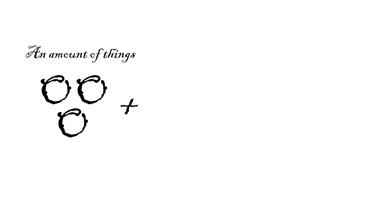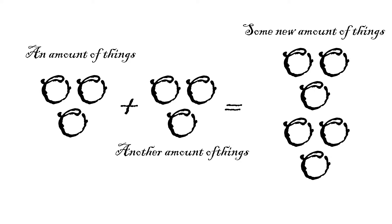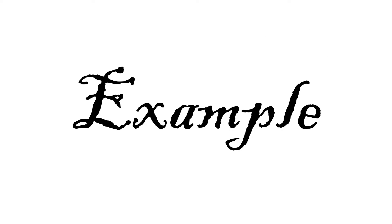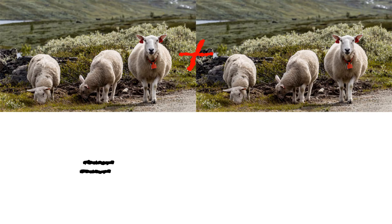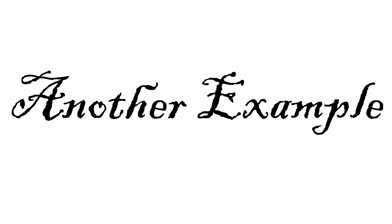If you take an amount of things, and you take another amount of things, you see how many things you end up with. For example, if you have three sheep and you have three more sheep, you have six sheep.